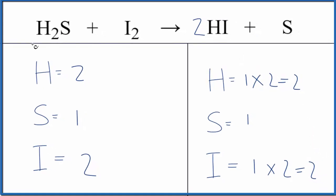If you wanted to report the coefficients, you could say one, one, two, one. But we don't write the ones by convention.